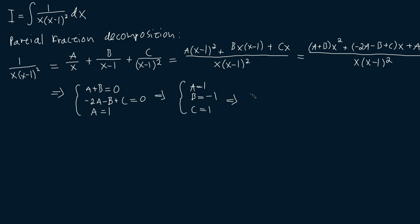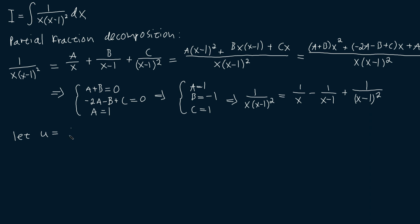This then implies that our integrand 1 over x times x-1 squared can be expressed as 1 over x minus 1 over x-1 plus 1 over x-1 squared. Now we're almost ready to integrate, and before we do that, we're going to make the following substitution: we'll let u be equal to x minus 1, so that du is just dx.